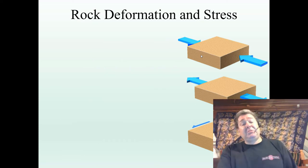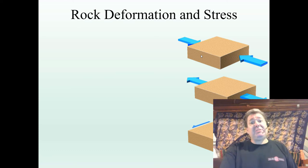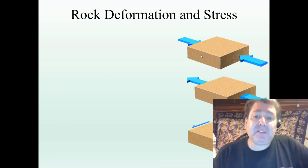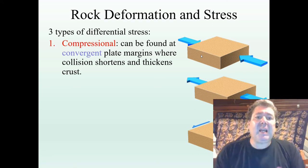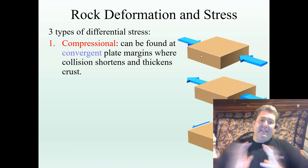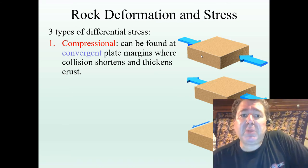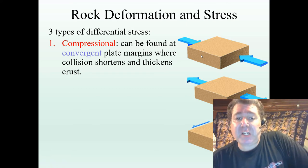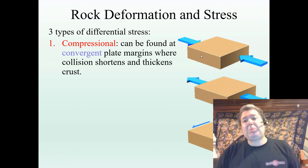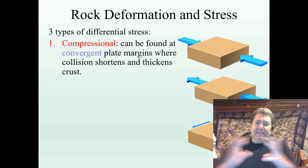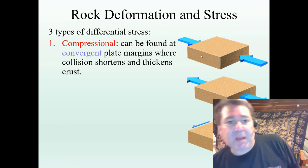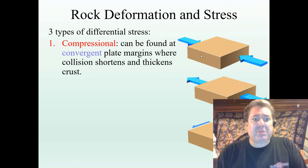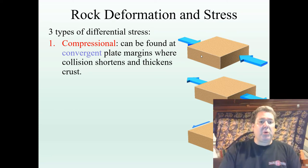Let's look at the three types of stresses we can apply to rocks and relate them back to the three different types of plate tectonic boundaries. First, we have compressional stress — pushing together — found at convergent plate margins where things are coming together. The space issue here is that you don't have enough space, so things are going to have to shorten and thicken. Think of the Himalayas — shortened and thickened when India crashed into Asia about 40 million years ago.